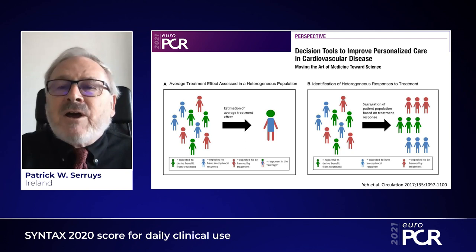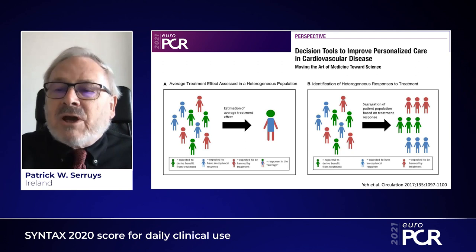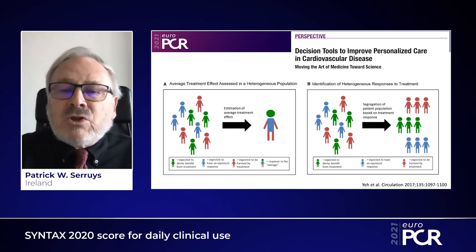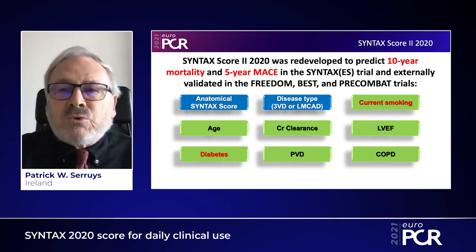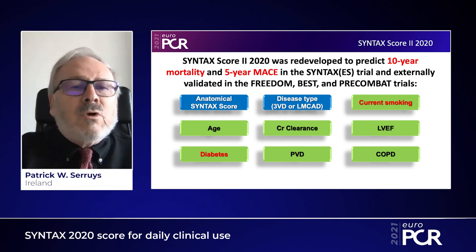Today, we try to identify heterogeneous response to treatment, and we try to segregate the patient population based on treatment response so that we know in advance: the red patient is expected to be harmed by the treatment, the green one expected to derive benefit, and the blue one expected to have an equivocal response. The SYNTAX score 2020 was redeveloped to predict 10-year mortality and five-year MACE in the SYNTAX trial, and externally validated in the FREEDOM, BEST, and PRECOMBAT trials.